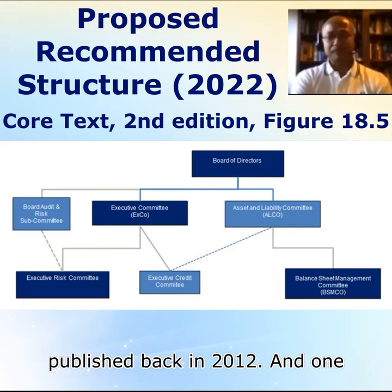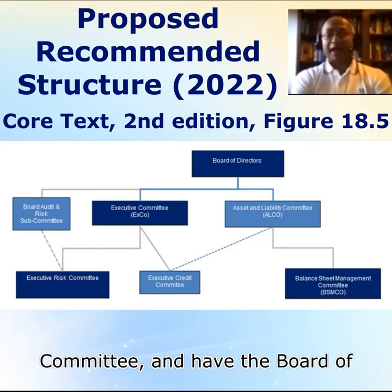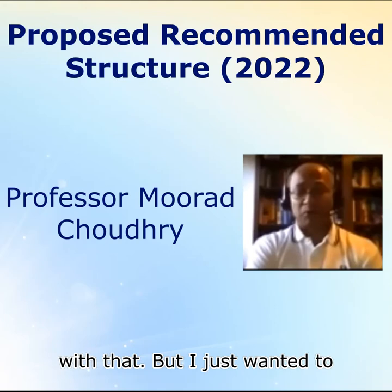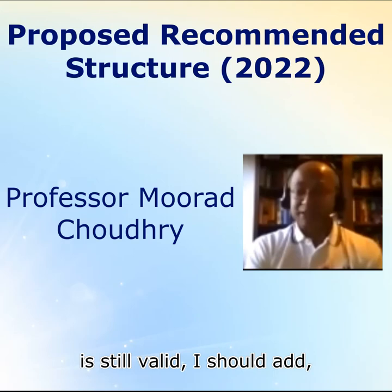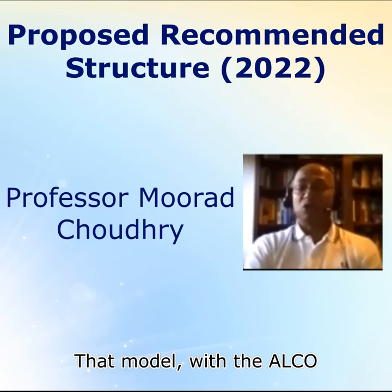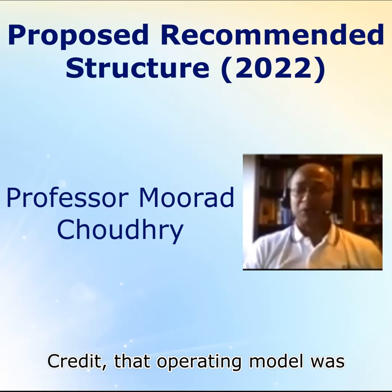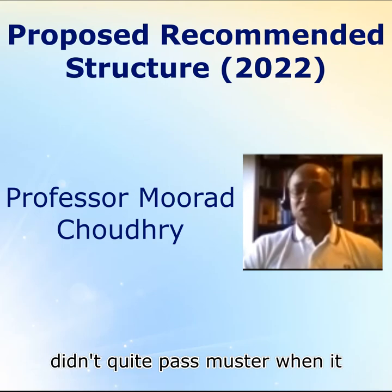One of the comments I received was that ALCO is an executive committee and therefore it makes sense for it to report to the CEO-chaired EXCO, with the board having oversight — which is fine and very common, nothing wrong with that. But I wanted to point out that this operating model, previously published in 2012, was what every UK bank that went bust in 2007 and 2008 had in place. That model — with ALCO reporting into EXCO and no credit oversight of ALCO — was in place at Northern Rock, HBOS, and Royal Bank of Scotland, and didn't quite pass muster when it came to preserving balance sheet robustness and viability.